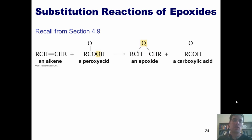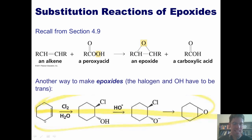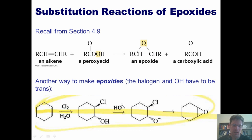There is another way of making epoxides as well. If I have an alkene and convert it into a halohydrin, as discussed in a previous chapter, and if the halogen and the OH are trans to each other, then I can react it with a base such as hydroxide. That base will strip the proton off of this oxygen, giving me an O-.